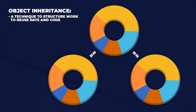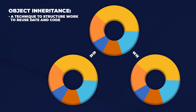Finally, there is something called object inheritance. That's a technique to structure your work where you can reuse objects. The objects in the lower part here inherit the data and the behavior — the methods — of their parent class or object definition. So it's a technique to structure your work, organize it better, and to reuse data and code.